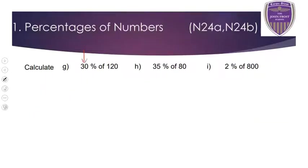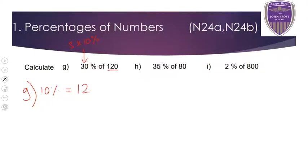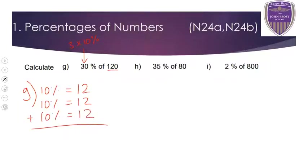For 30%, 3 lots of 10 is the best way. Do 10% first — divide by 10. So 120 divided by 10 is 12. Then either times that number by 3, or write the same number three times and add them together. Either way, 30% of 120 is 36.